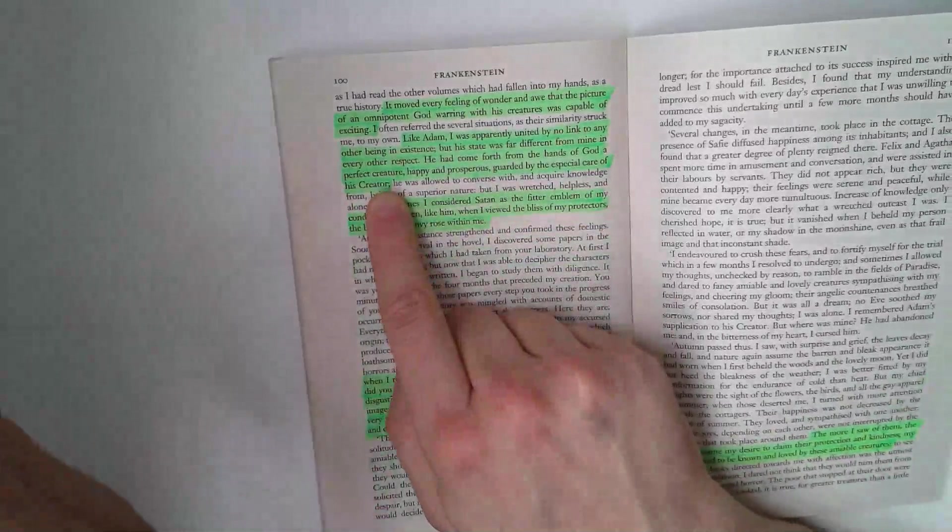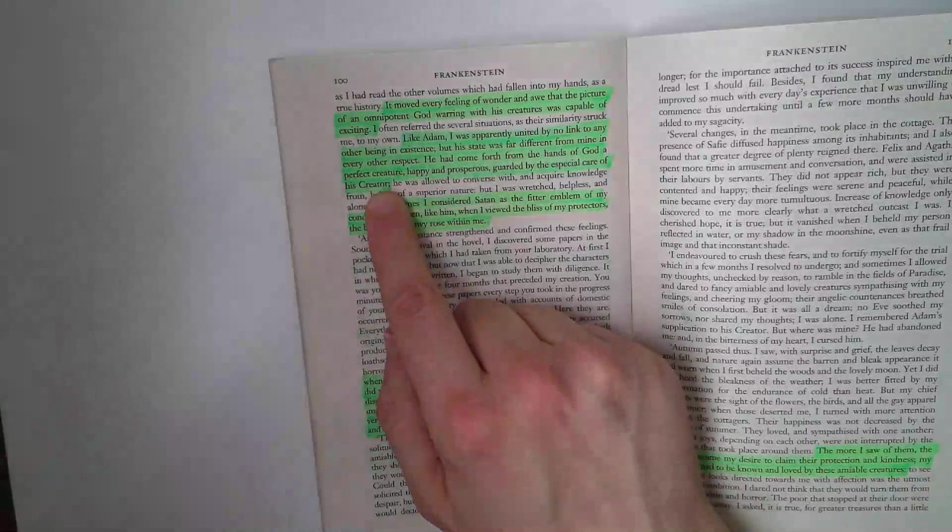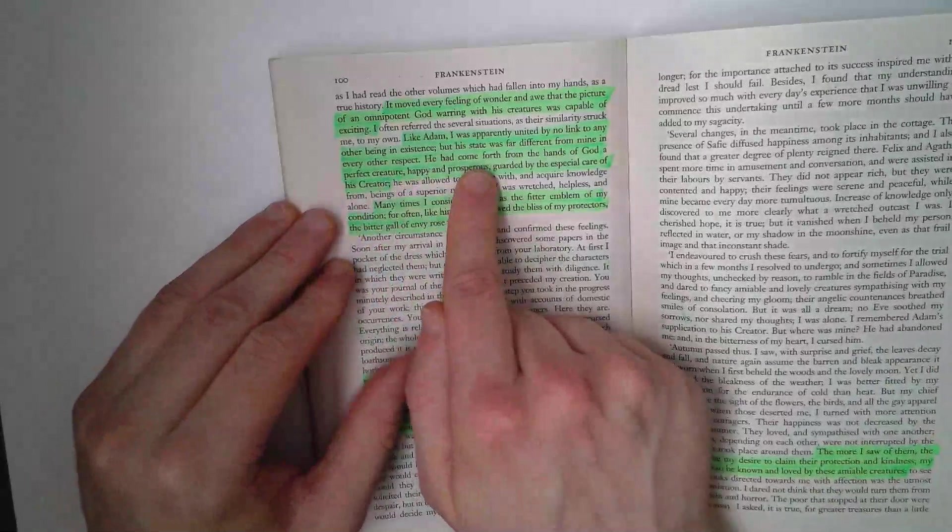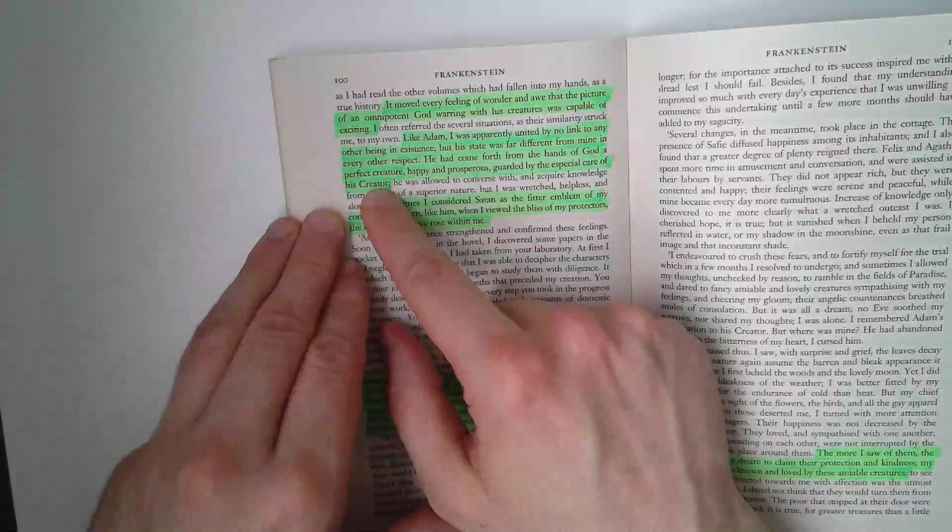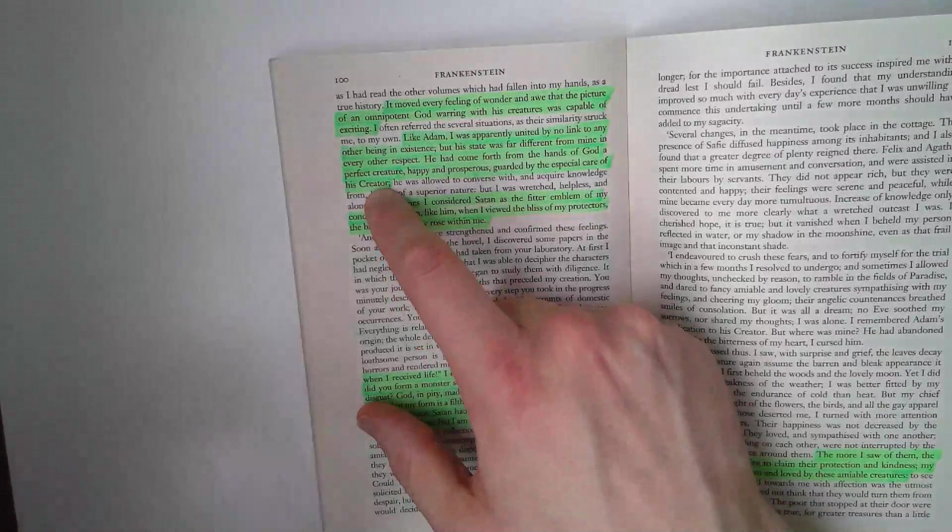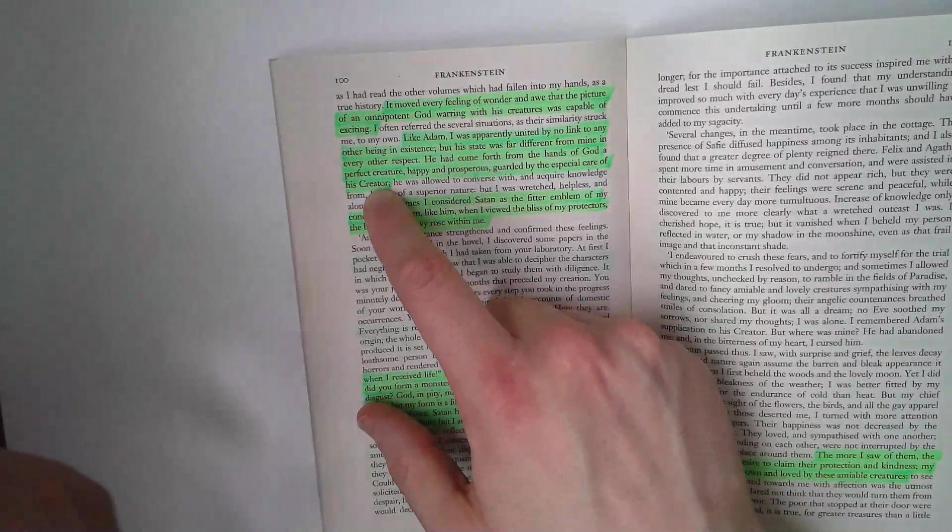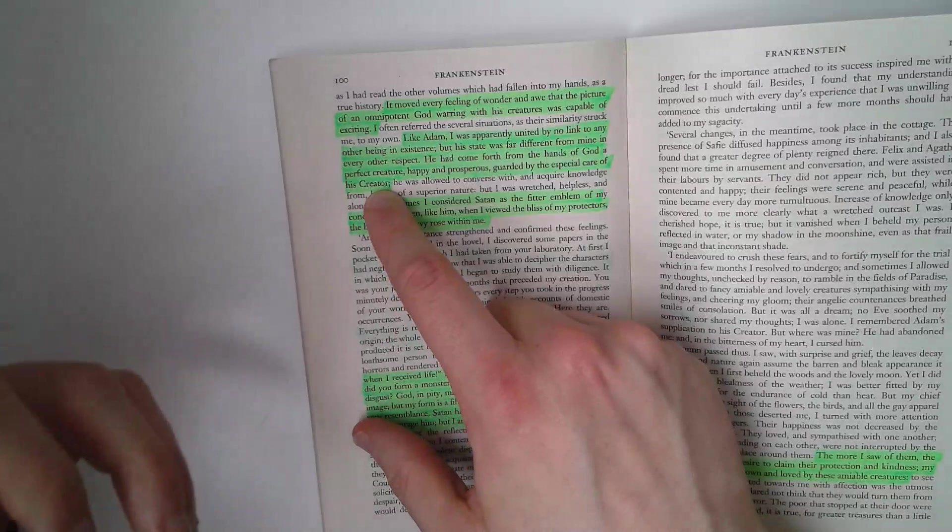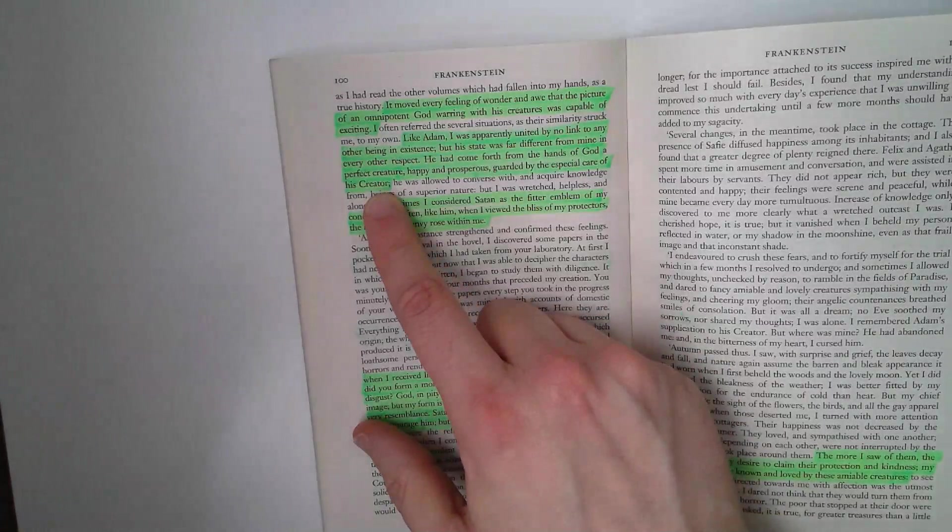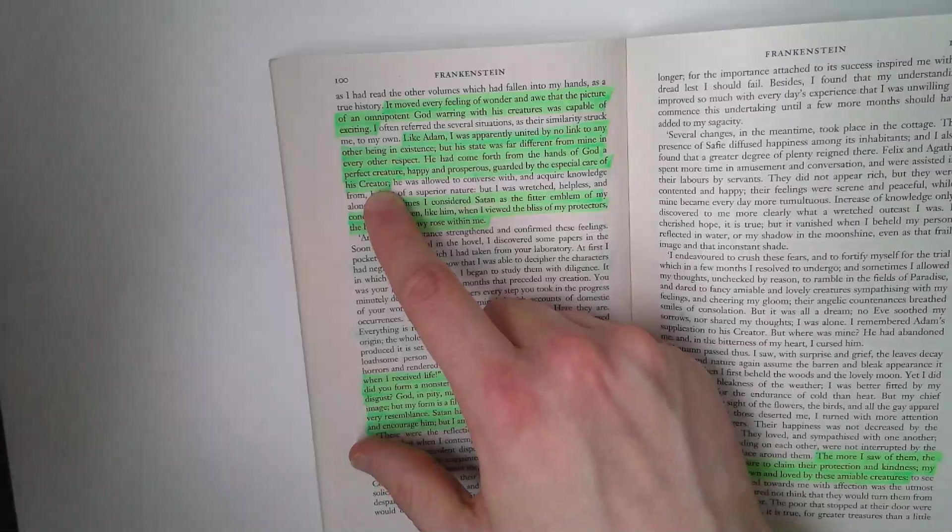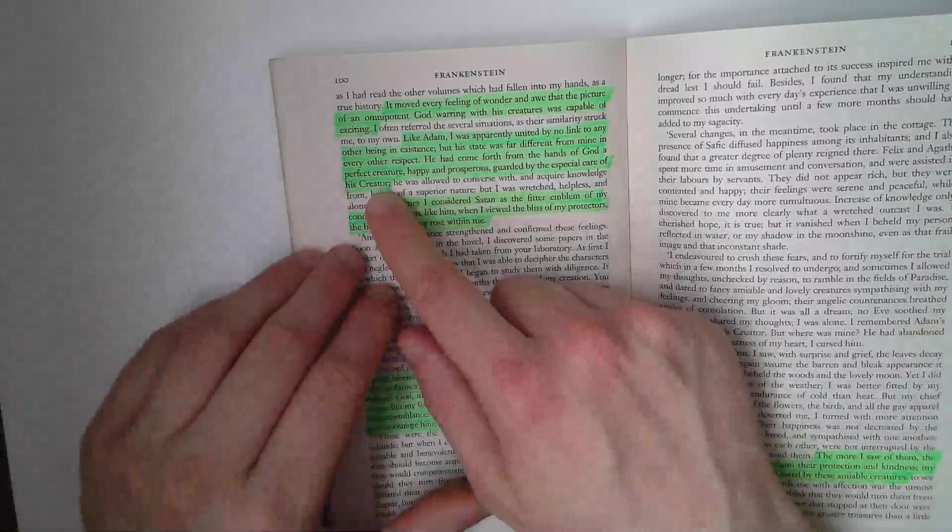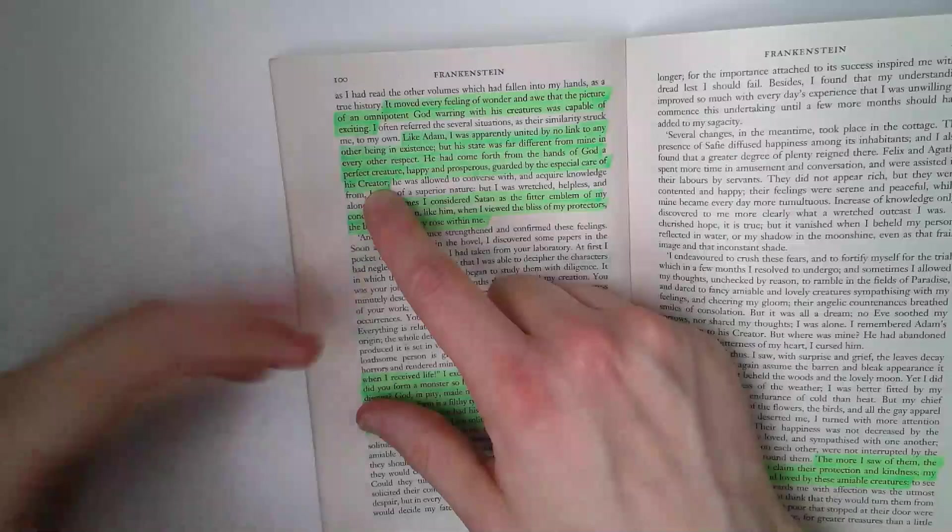The creature views himself as being like Adam in that he was created, but so different from Adam in the respect that he was perfect, happy, and prosperous, and protected by God. Even when Adam was tempted by the serpent and Eve to eat from the fruit of the tree of knowledge, even then God doesn't destroy Adam or reject Adam. He banishes Adam from the Garden of Eden but he's not banished entirely. He's still protected and cared for by God despite committing the original sin.